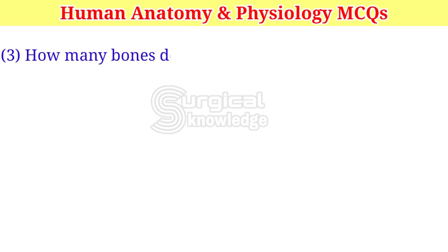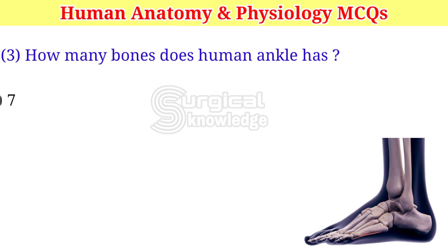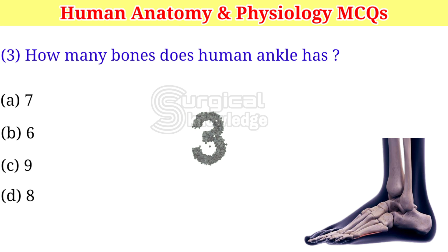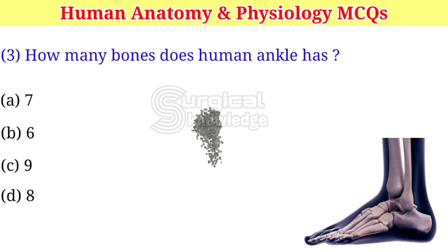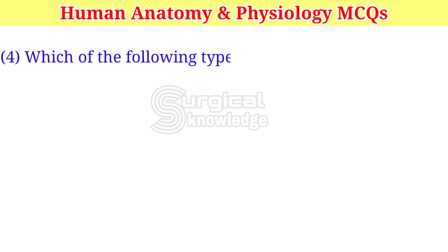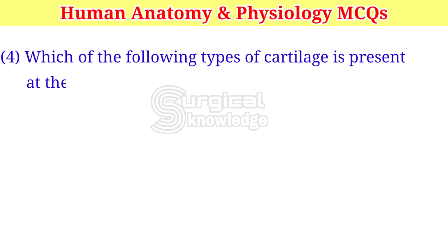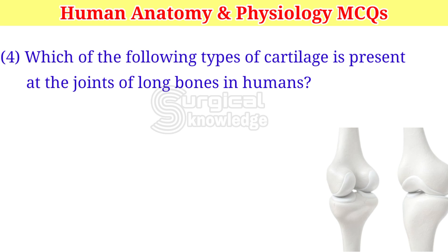How many bones does the human ankle have? A. 7. B. 6. C. 9. D. 8. Right answer is 7.